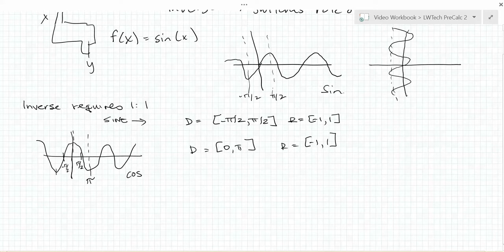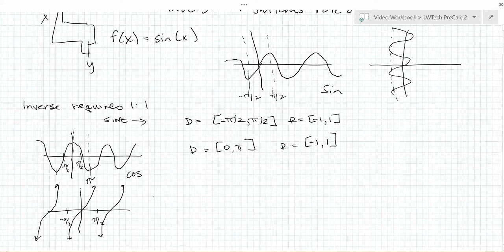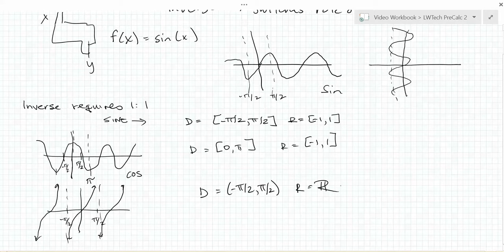For the tangent, we'll go back to limiting our function between negative pi over 2 and pi over 2. This allows us to have a full range of all possible y values — all real numbers. In interval notation, we'll write this limited domain as negative pi over 2 to pi over 2, with a range of all real numbers. Notice that with our interval notation, we use parentheses instead of brackets, because the tangent function is undefined at negative pi over 2 and pi over 2.